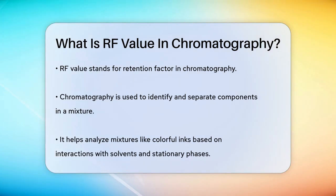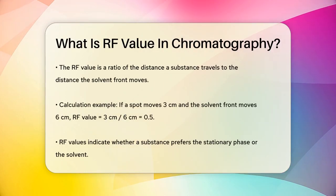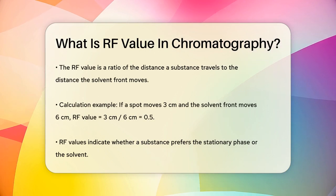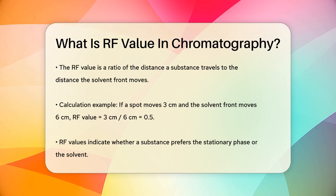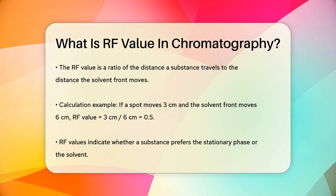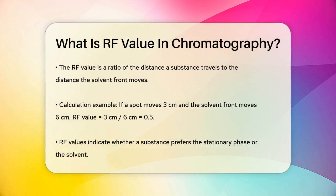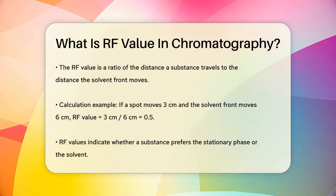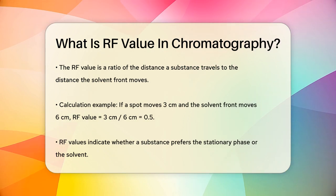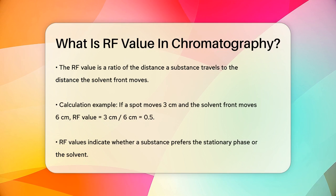The RF value is a simple ratio that tells us how far a particular substance has traveled compared to the solvent front. It's calculated by measuring the distance the substance or spot has moved from the starting point and dividing it by the distance the solvent front has moved. For example, if a spot moves 3 centimeters up the paper and the solvent front moves 6 centimeters, the RF value would be 3 divided by 6, which equals 0.5. This value helps scientists understand whether the substance prefers to stick with the stationary phase or move with the solvent.